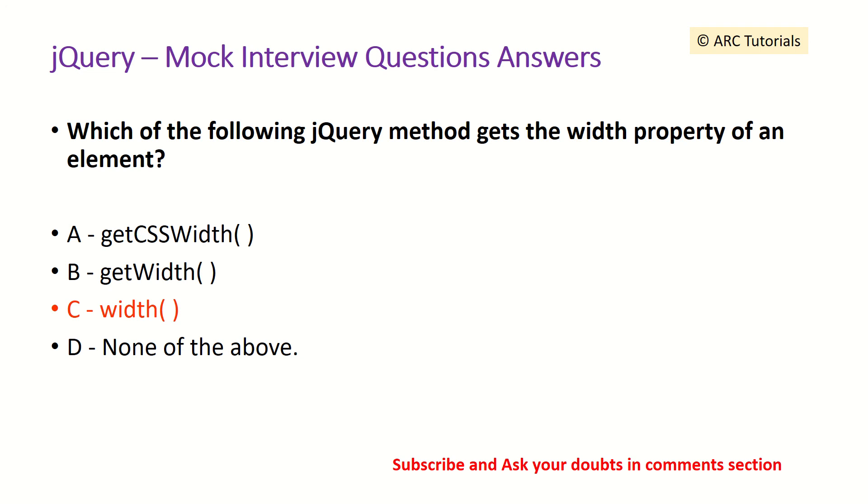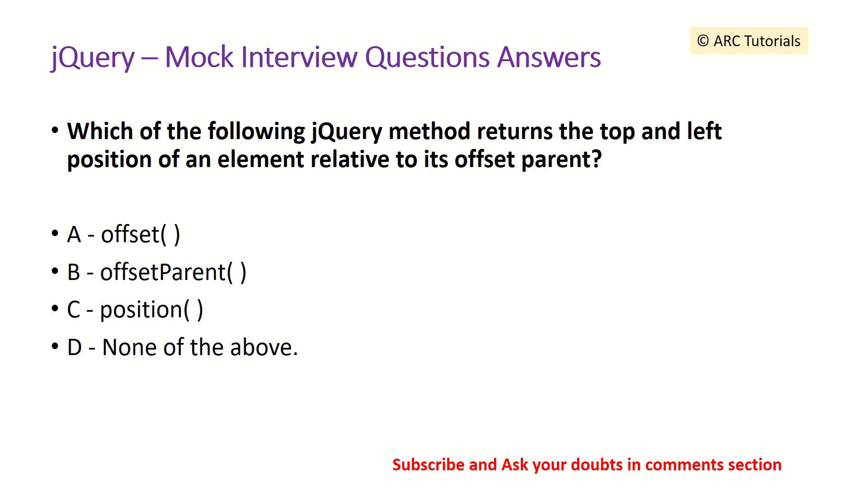Which of the following jQuery method returns the top and left position of an element relative to its offset parent? So here we are trying to find top and left position.